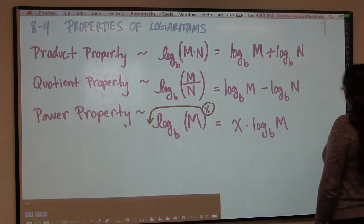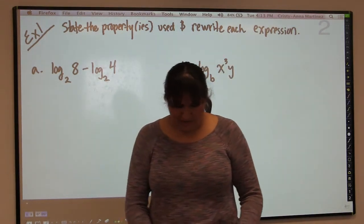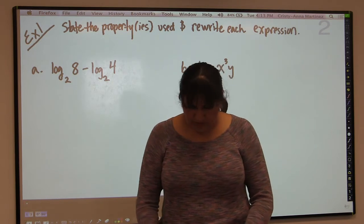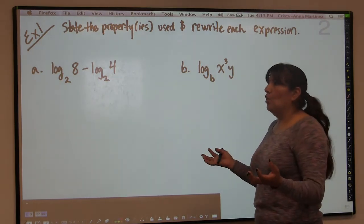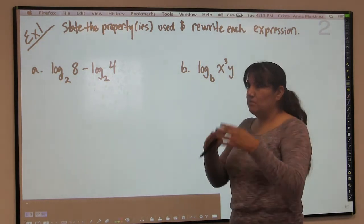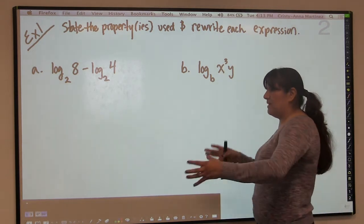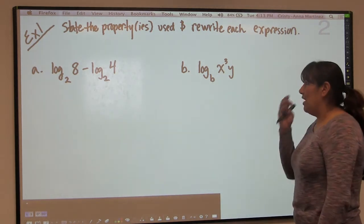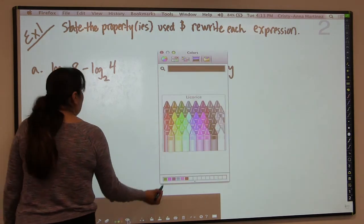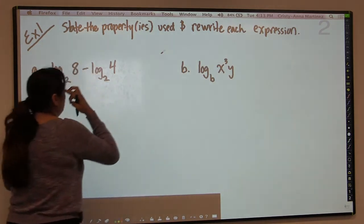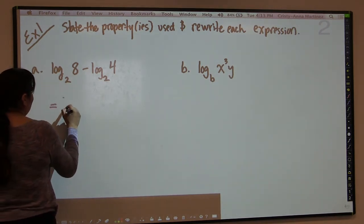We're going to start with some examples. There are basically two kinds of things you do with logarithms: you either expand them or condense them. You either take multiple logarithms and write as a single logarithm, or take a single logarithm and expand it to multiple logarithms. First, I want to do this one — I have subtraction here, so I'm going to use the quotient property.